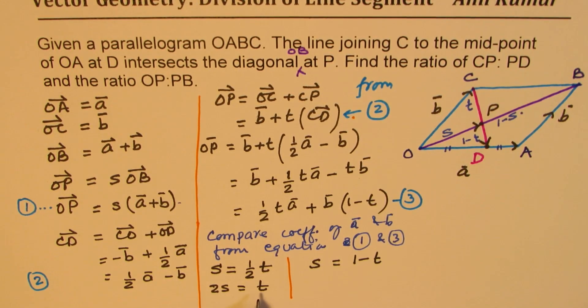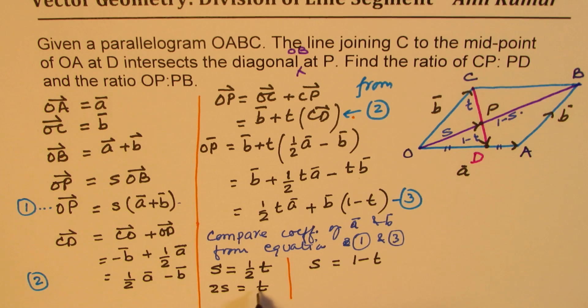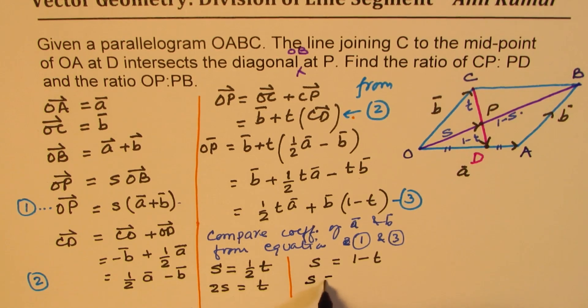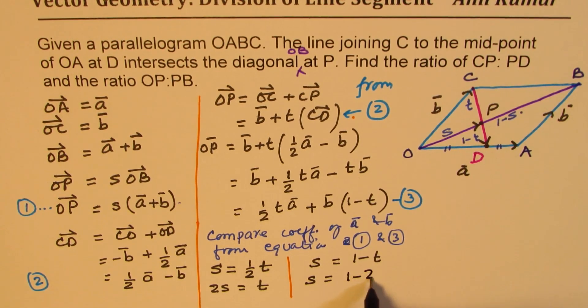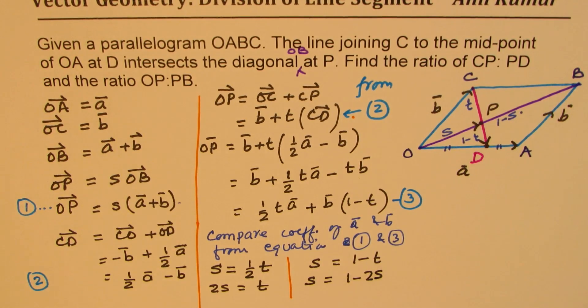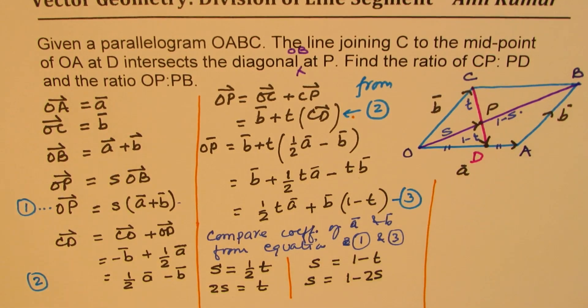Now, since we know that T is 2S, we can actually find the value of T. So T is 2S, so S equals to 1 minus 2S. And that should help us to find the ratio.